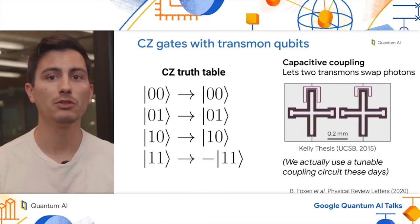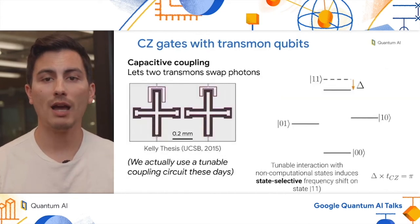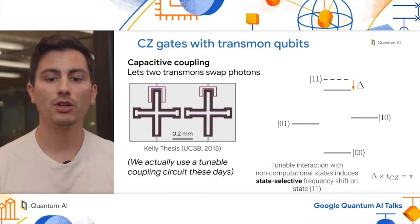Now in order to do a two qubit gate, you need to introduce some sort of interaction between two qubits. Fortunately, if you simply place two transmons next to each other, a shared capacitance is formed between them. And through this capacitive coupling, we can actually have a swapping interaction between the two. Now, in today's circuits, we actually introduce additional complexity, which allows us to dynamically tune the strength of this capacitive coupling. Now, this is very important for our optimization of CZ gates. So what happens during a CZ gate? Well, it turns out if you turn on this interaction and bias both qubits in just the right way, you can get a state selective frequency shift of the two qubit state 11. And if we tune the strength of this interaction and its duration, we can get the desired minus one factor.